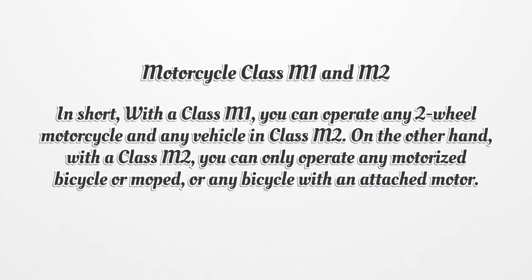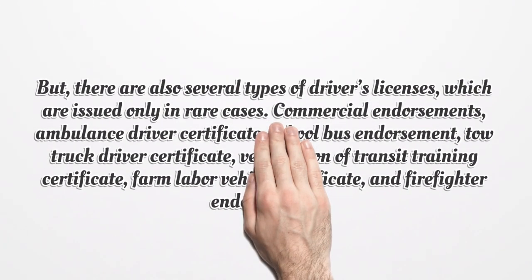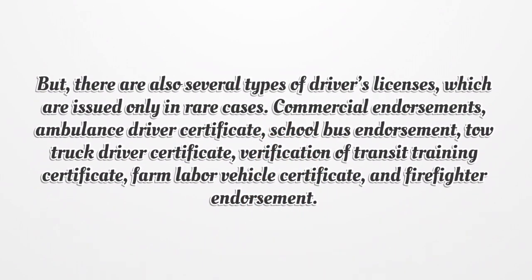Motorcycle Class M1 and M2: with a Class M1, you can operate any two-wheel motorcycle and any vehicle in Class M2. With a Class M2, you can only operate any motorized bicycle or moped, or any bicycle with an attached motor. There are also several types of driver's licenses issued only in rare cases: Commercial Endorsements, Ambulance Driver Certificate, School Bus Endorsement, Tow Truck Driver Certificate, Verification of Transit Training Certificate, Farm Labor Vehicle Certificate, and Firefighter Endorsement.